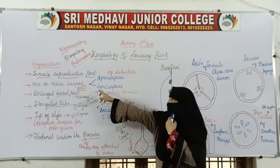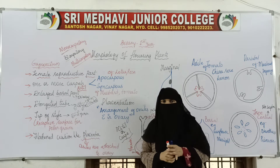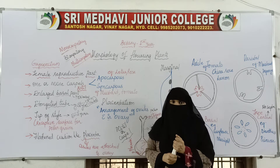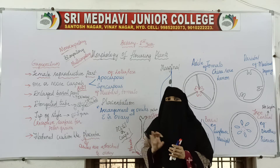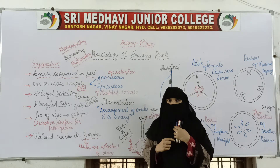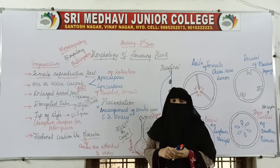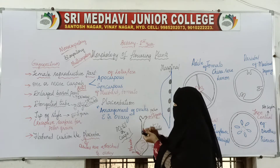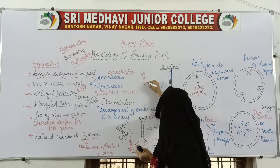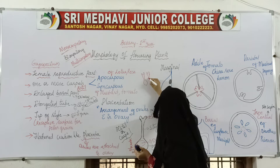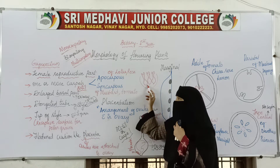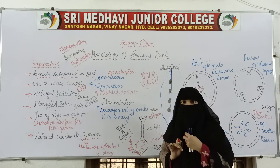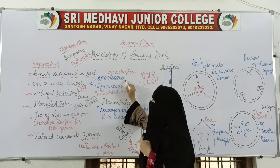To recap: one carpel is monocarpellary, two carpels is bicarpellary, many carpels is multicarpellary. Now, if three carpels are present and all the carpels are free — not attached to each other — that condition is called apocarpous. Apocarpous means free carpels; they are not fused together.